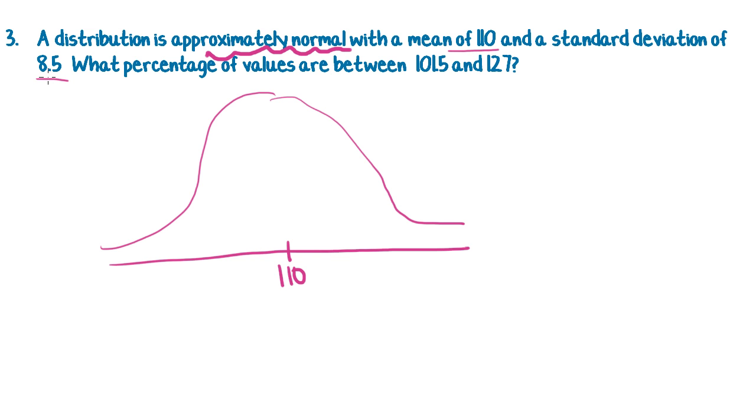Now, I'm travelling 8.5 in each direction, so I'll start with 110 minus 8.5 is 101.5. So that's that first point, one standard deviation away. Now, 110 plus 8.5 is 118.5. Okay, so let's keep going. Plus another 8.5 gets us to 127.